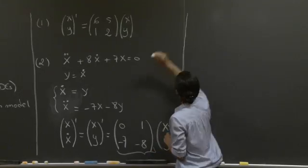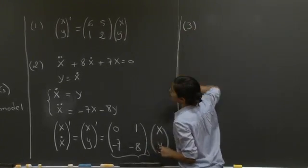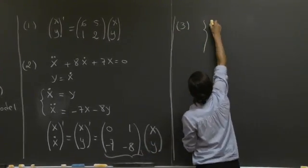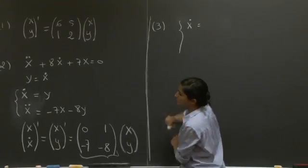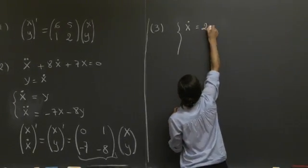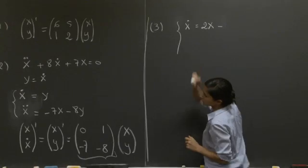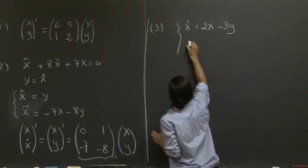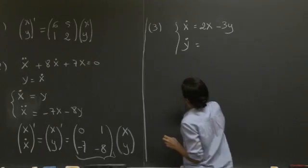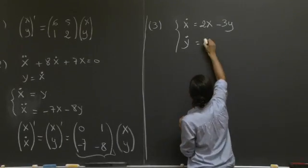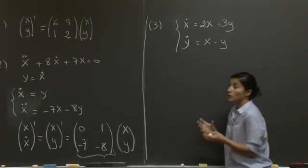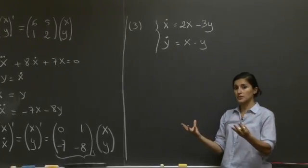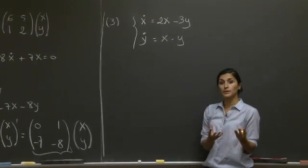Now for the third question, we're asked to interpret this population dynamics system of equations: x dot equals 2x minus 3y, y dot equals x minus y. The question was, we have two species. Which one is the prey, which one is the predator?